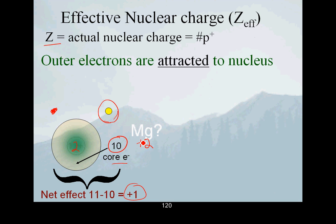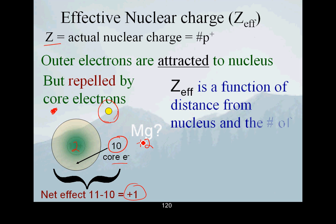So put another way, these outer electrons are attracted to the nucleus because of positive-negative electrostatic attraction, but are repelled by those core electrons. So the Z effective is a function of the distance from the nucleus, how far away, and the number of core electrons.